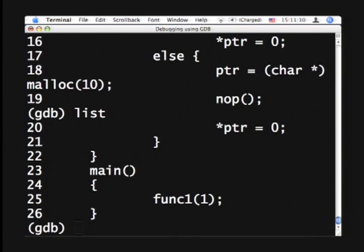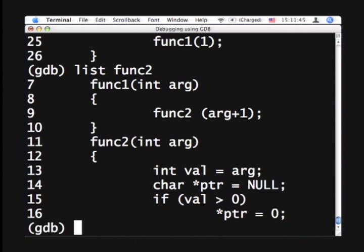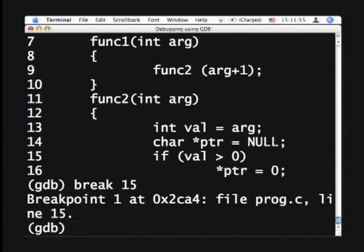Next we look at more interesting commands where we want to set a breakpoint to capture the state of system before we get a segmentation violation. And we know the bug might be in func2. So let's say, let's list func2, and we want to see what happens at the point, say line 15. So we say break 15, which basically says I want to set a breakpoint at line 15. So the program comes to line 15, it should stop. So let's go ahead and run the program again.